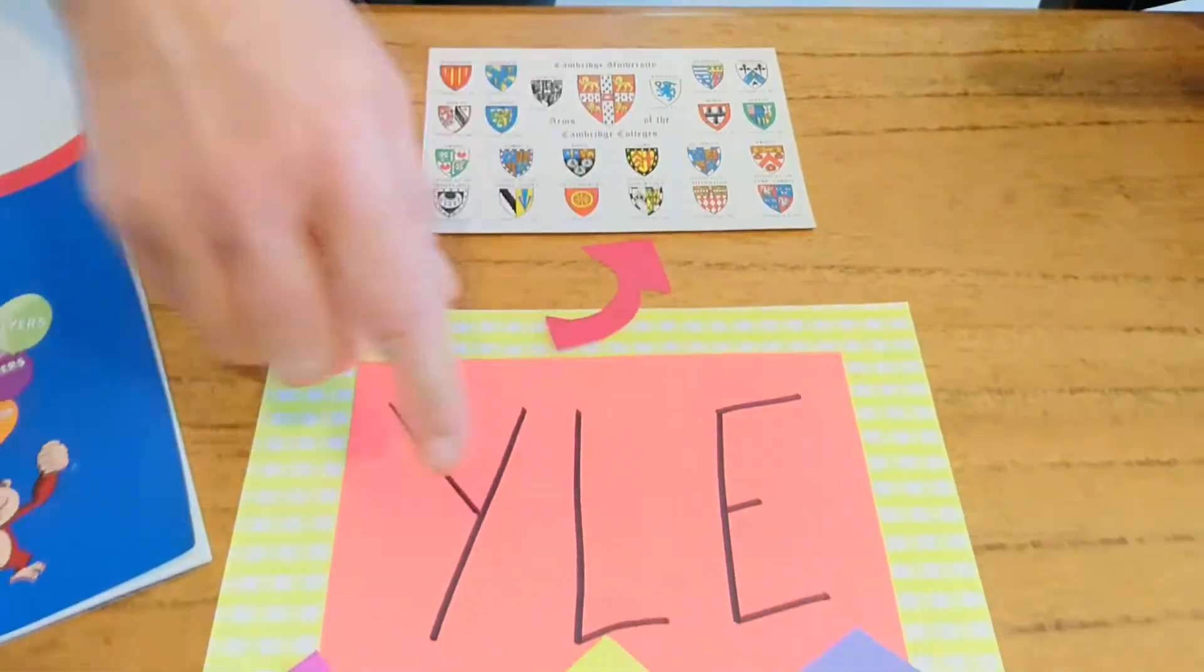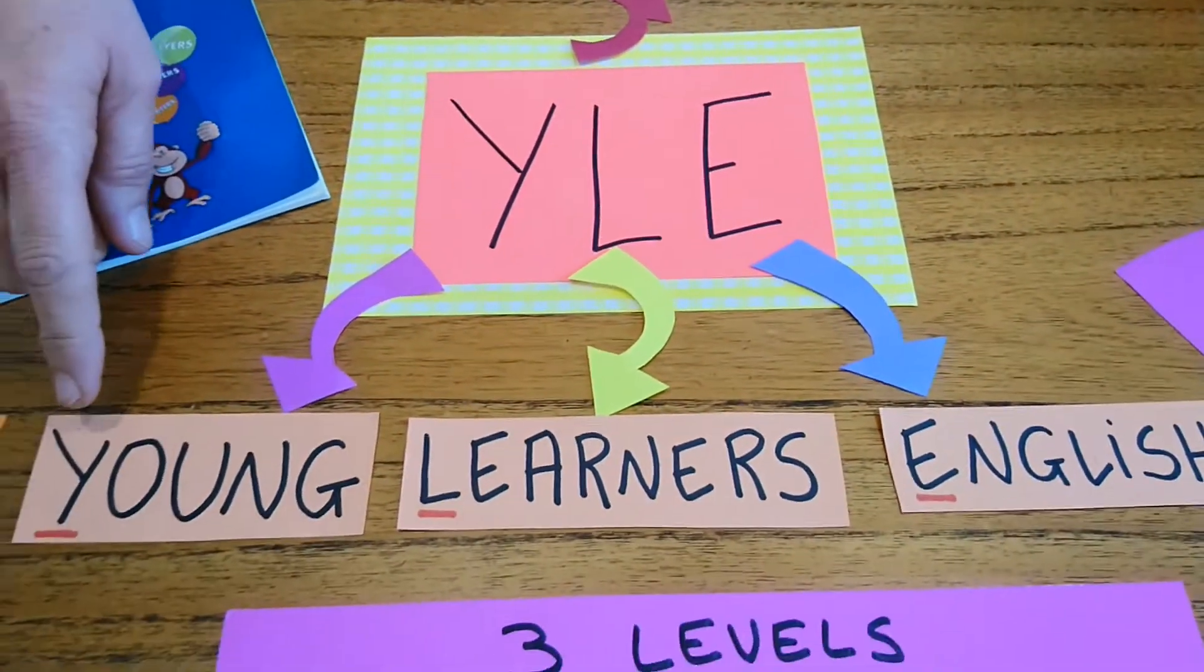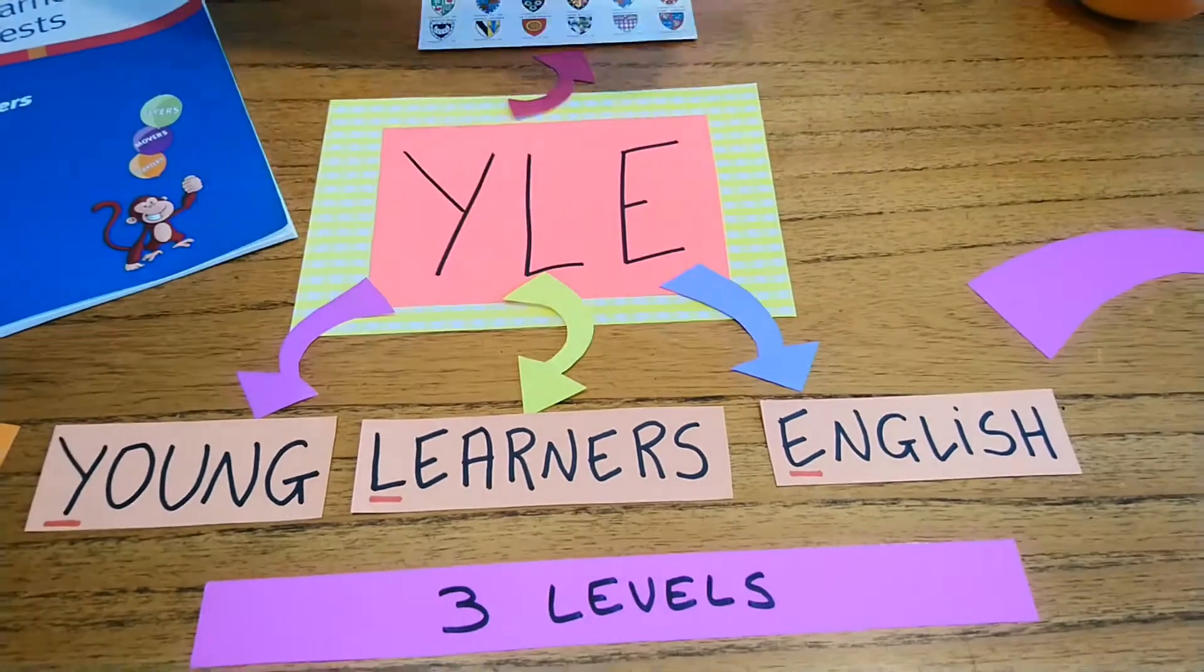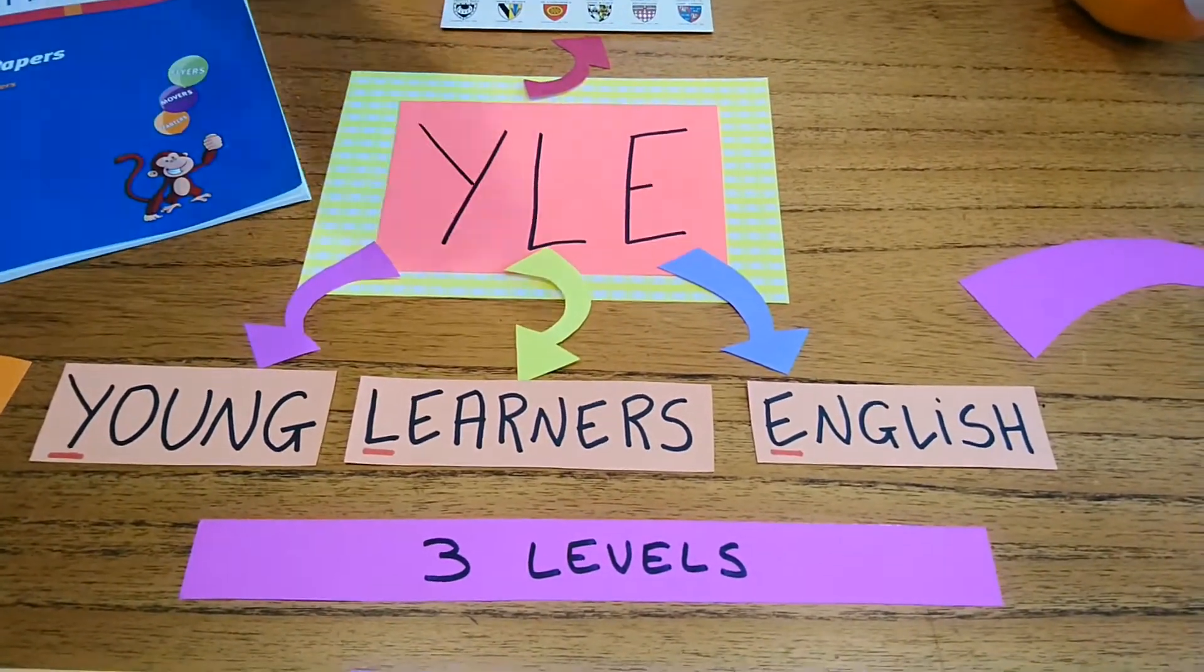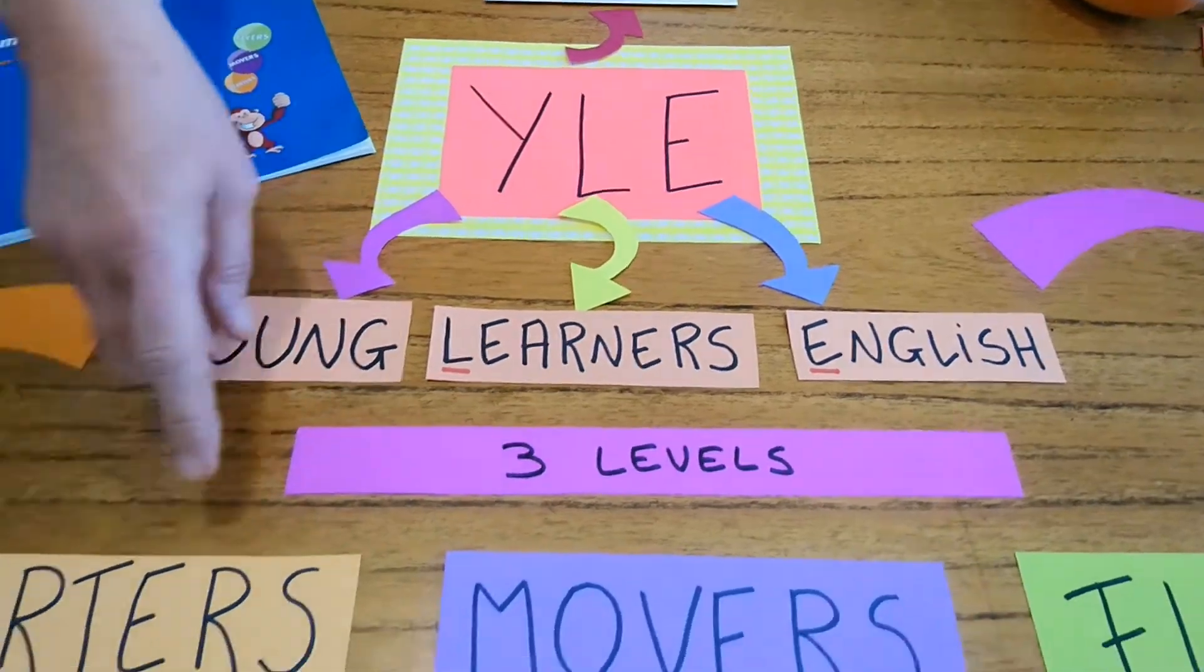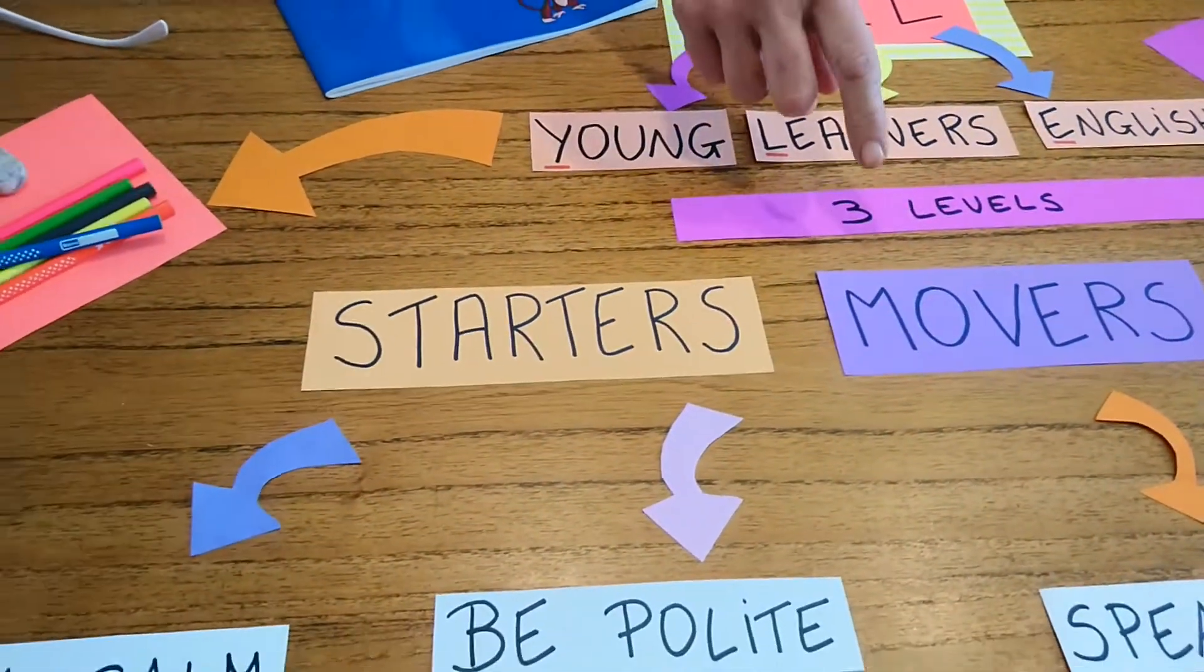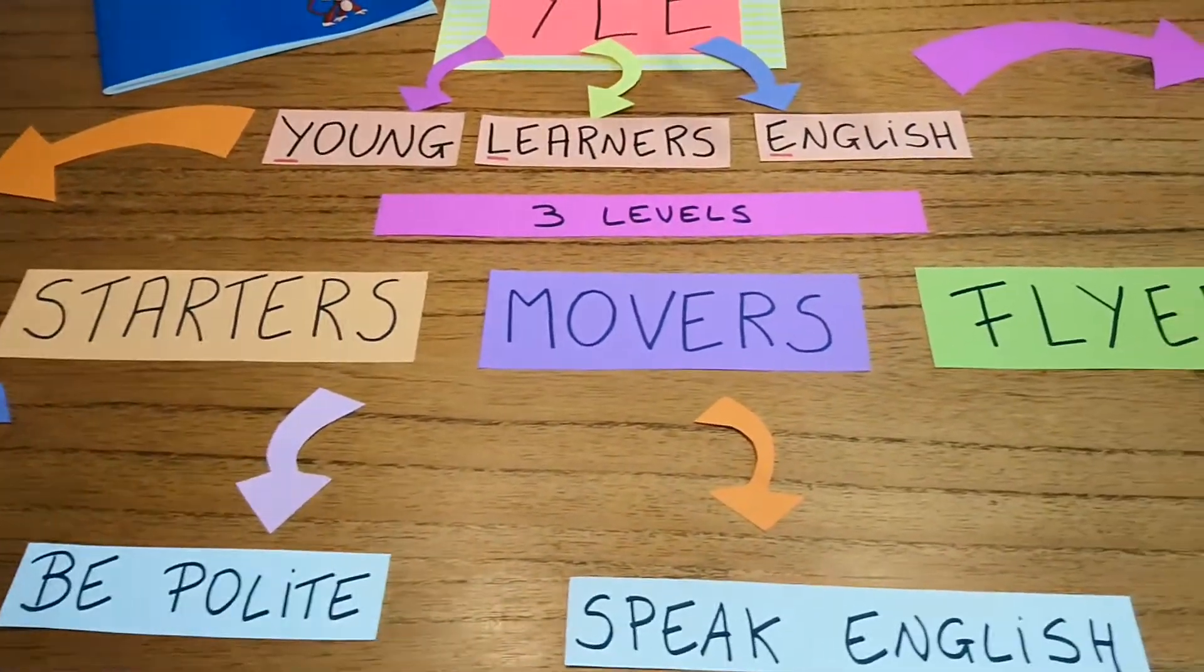YLE stands for Young Learners English. You have three levels that you can take: Starters, Movers and Flyers.